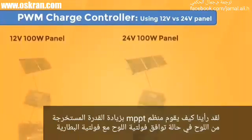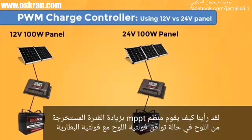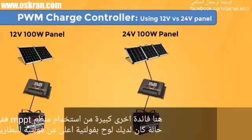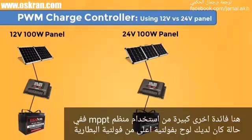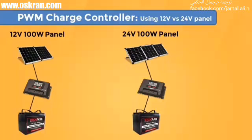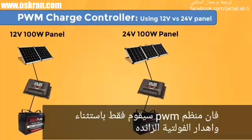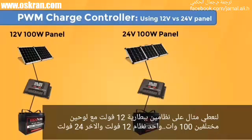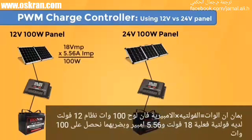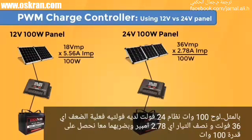You've seen how an MPPT charge controller can maximize the output when the solar panel's nominal voltage matches the battery bank's nominal voltage. Here is another huge advantage of using MPPT: if you have a solar panel array that has a higher nominal voltage than the battery bank, a PWM charge controller is just going to throw away that extra voltage. Let's give an example of a 12-volt battery bank with two different 100-watt panels — one 12-volt and one 24-volt. Since watts equals volts times amps, a 100-watt 12-volt nominal panel with a VMP of 18 volts has an IMP of 5.56 amps (18 volts times 5.56 amps equals 100 watts). Likewise, a 24-volt nominal 100-watt panel has twice the voltage but half the current: 36 volts times 2.78 amps equals 100 watts.